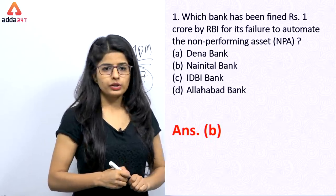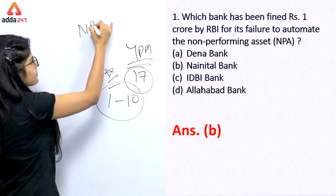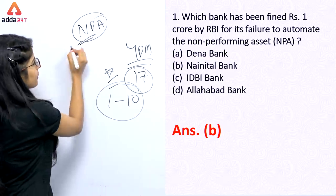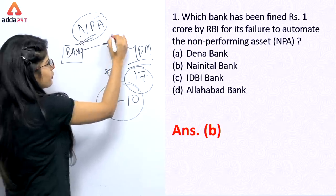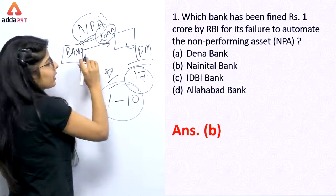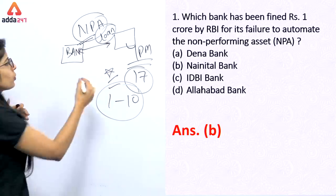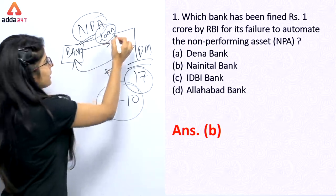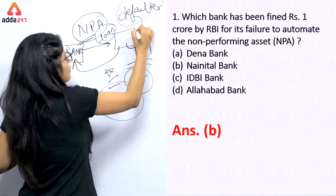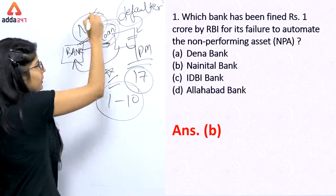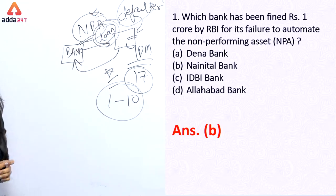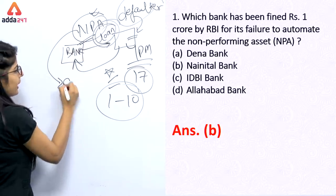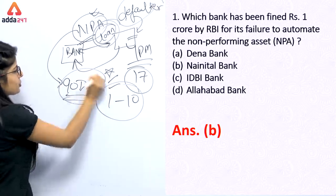NPA — the full form can also be asked. NPA stands for Non-Performing Assets. If you have a bank loan and the borrower is unable to repay, it is called a non-performing asset because the bank doesn't have any profit from it — no performance. We call that loan an NPA.